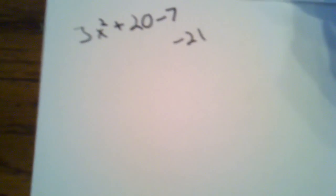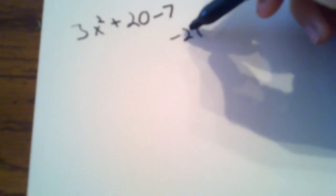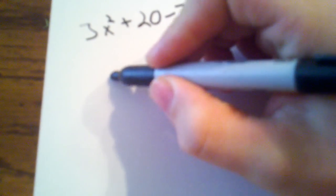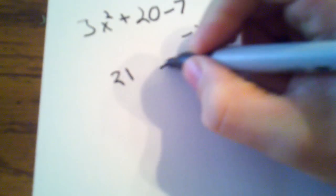So let's say you have a polynomial, 3x squared plus 20x minus 7. First, you have to multiply these two, and you get a negative 21. Now, what multiplies to get 21, but adds together to equal 20? Well, that would be a positive 21 and a negative 1.